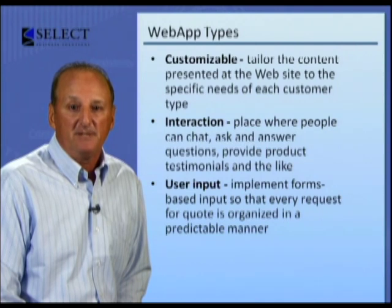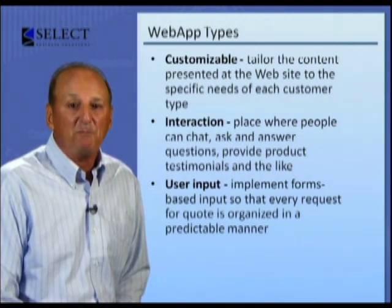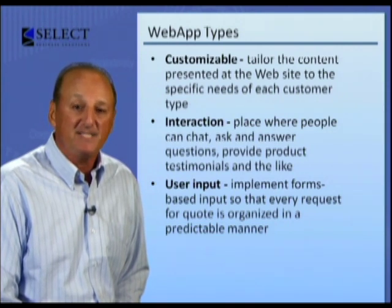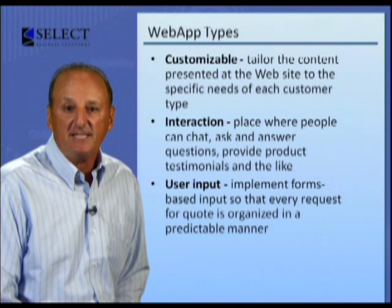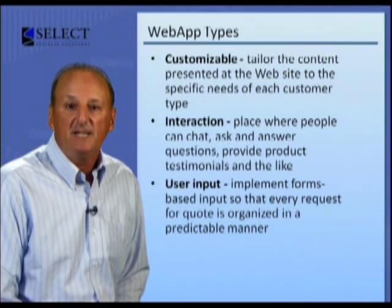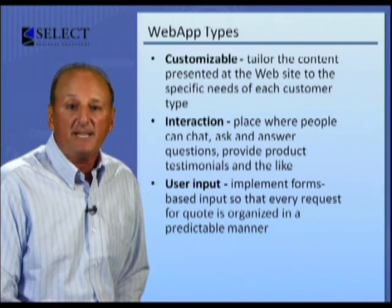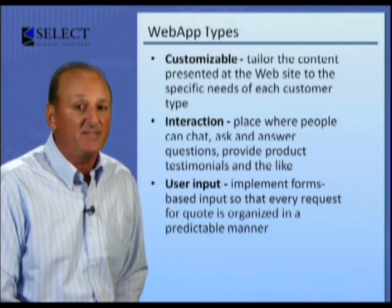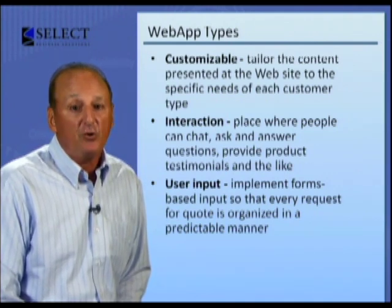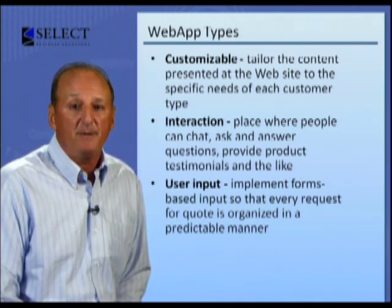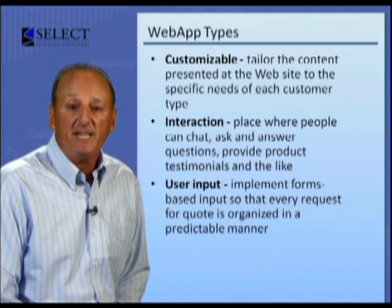Customizable web apps: as you learn more from your stakeholders, it becomes apparent that you have four kinds of potential end users. You want to tailor the content presented at the website to the specific needs of each customer type, using jargon and presenting content that will meet their needs. You do a major overhaul of your initial web app and create a new one that is customizable for each user.